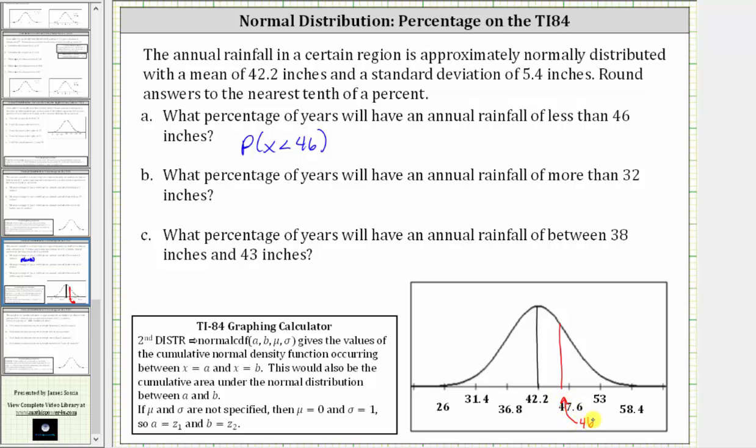To determine the percentage of years that will have an annual rainfall of less than 46 inches, we will use the TI-84 to determine the area under the curve to the left of 46. This will give us a decimal which we will then convert to a percentage. Remember, the total area under the normal curve is equal to one.